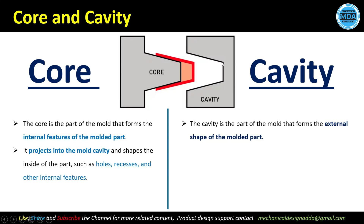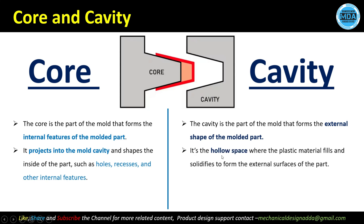Here you can see the material is cut out — this side is the cavity side of the mold. The cavity projects into the mold cavity and shapes the inside of the part: holes, recesses, and other internal features are generally formed on the core side. The cavity side is the hollow space where the plastic material fills and solidifies to form the external surface of the part.